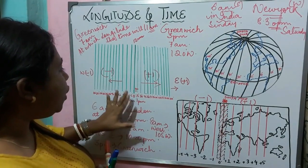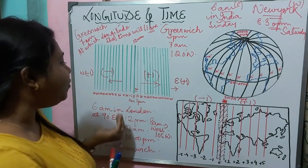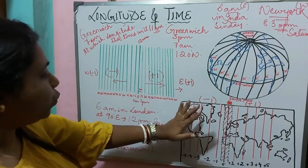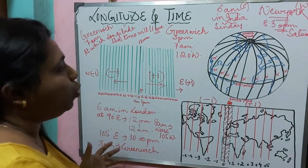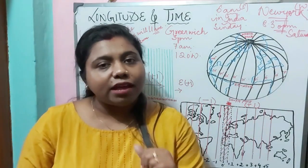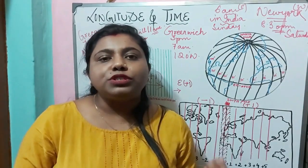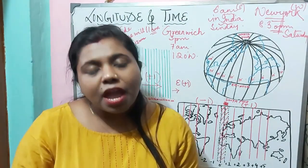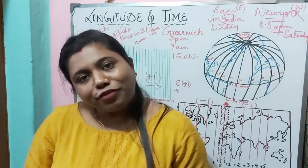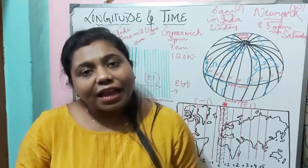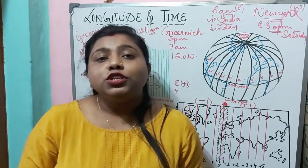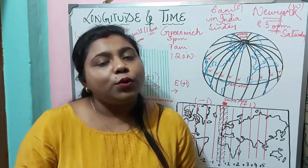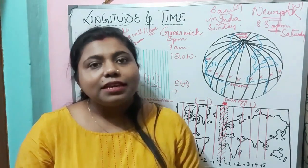If it is 12 o'clock in Greenwich, what will be the time at 15 degrees east and 15 degrees west? The Earth is divided into 24 time zones, and on the basis of time zones we have selected local times, which we will discuss in the next video. I hope all of you understood about longitude and time. Don't forget to read the NCERT and the PDF given in the description box. If you like my video, hit the like button, subscribe to my channel, and hit the bell button for notifications. Comment any questions below — until then, take care, stay safe.